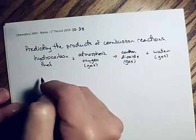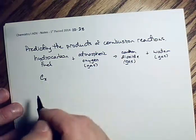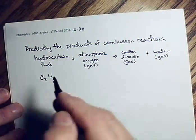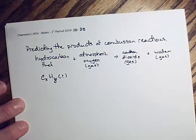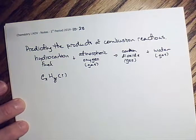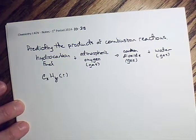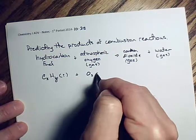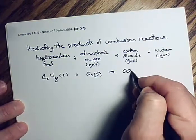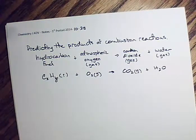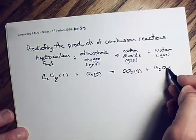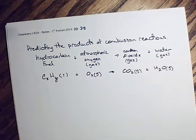The hydrocarbon fuel formula will be something like CₓHᵧ, and you assign its physical state based on the carbon count. Atmospheric oxygen is always O₂ (g). Carbon dioxide is CO₂ (g). Water in combustion reactions is always a gas — this is about the only time in this class where we can always say water is a gas.